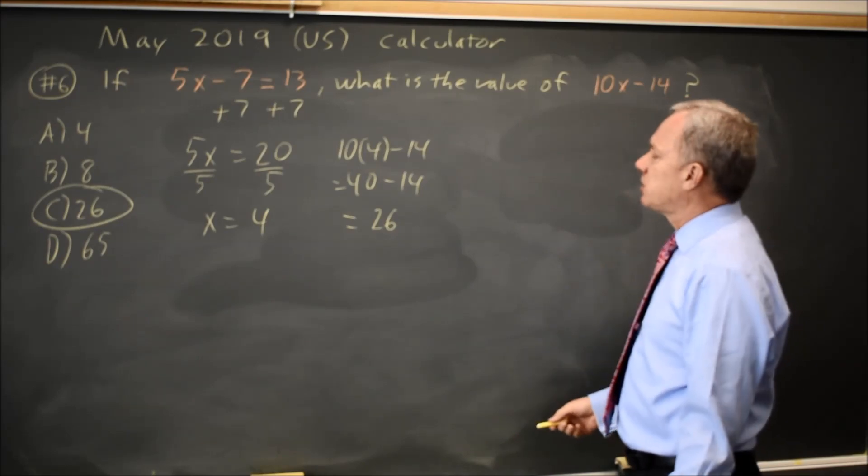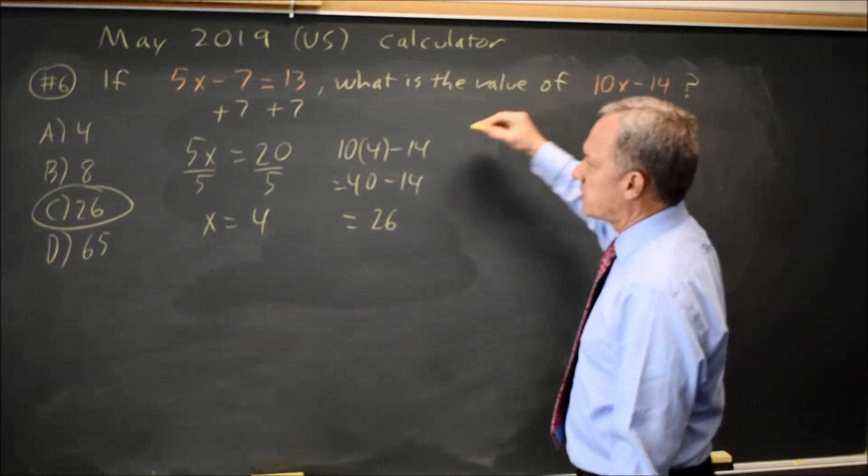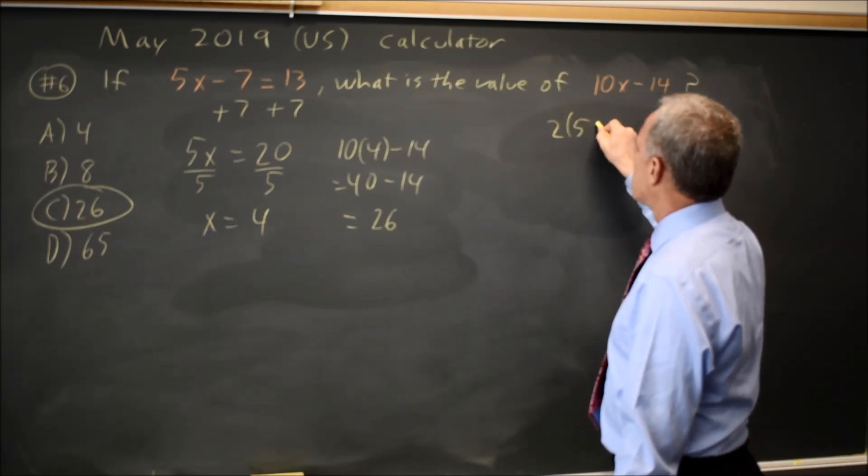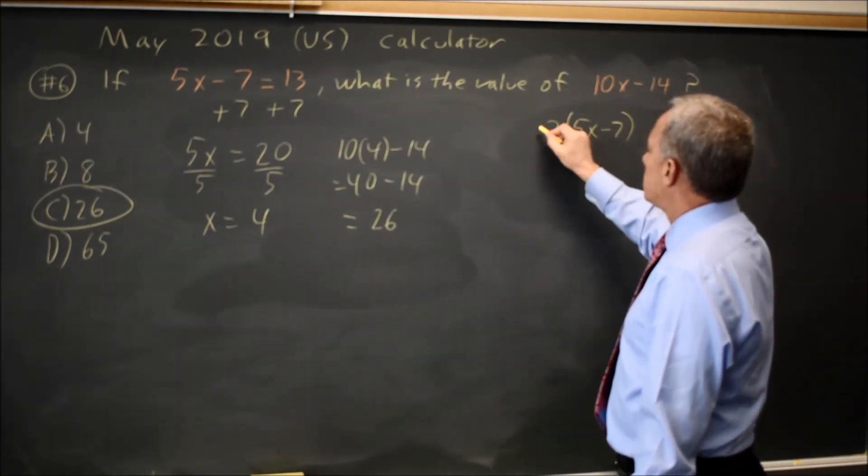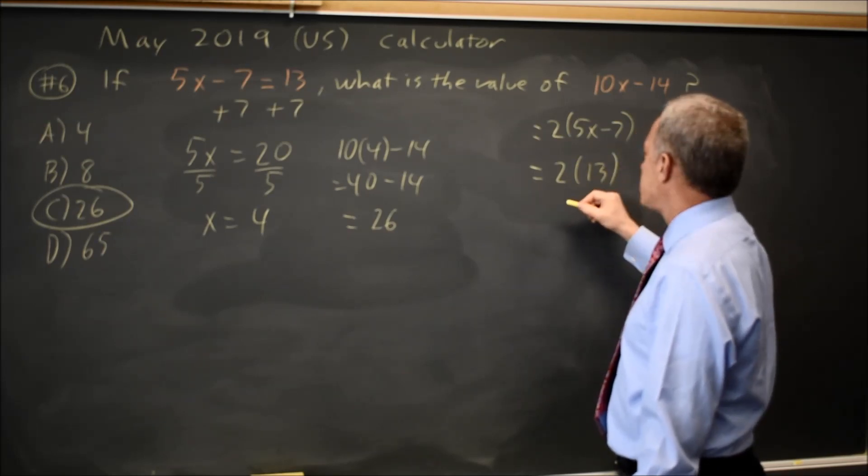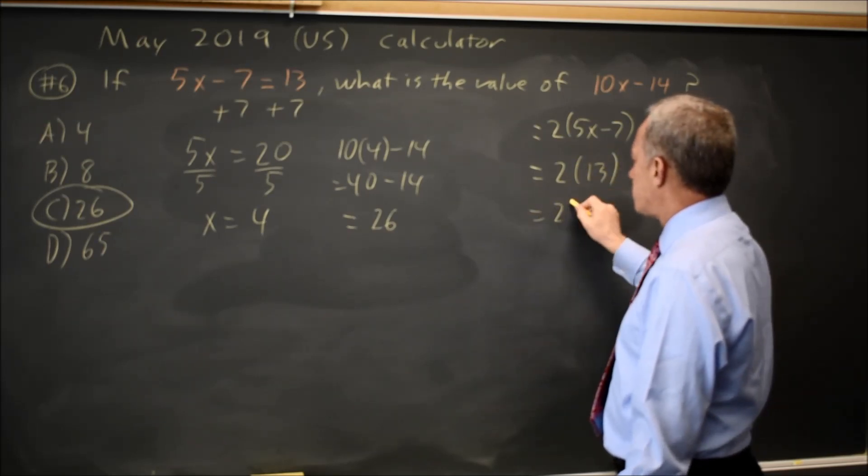Alternatively, there's a slight shortcut. If I notice that the expression they're asking for is twice my left-hand side, then that's twice 13 because the left-hand side is equal to 13, and that's 26.